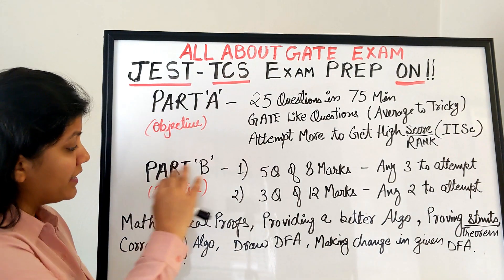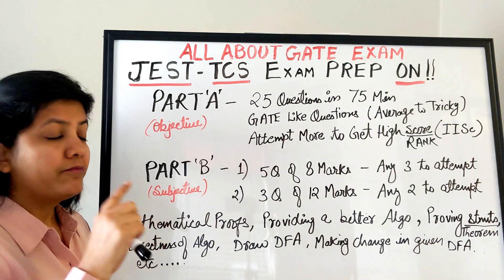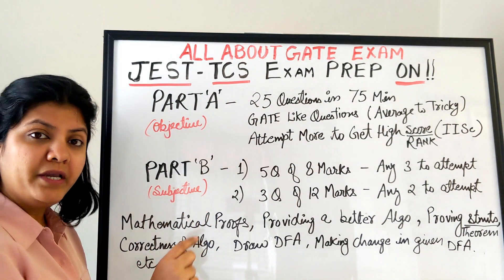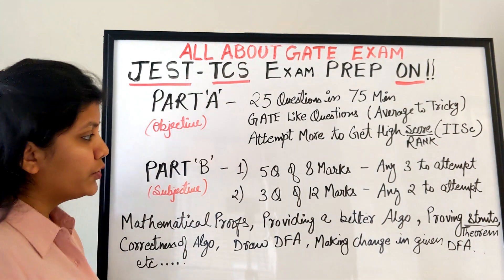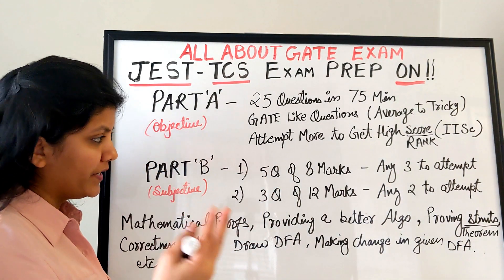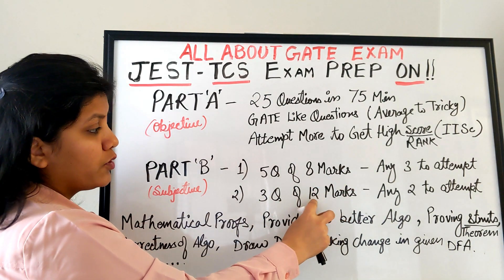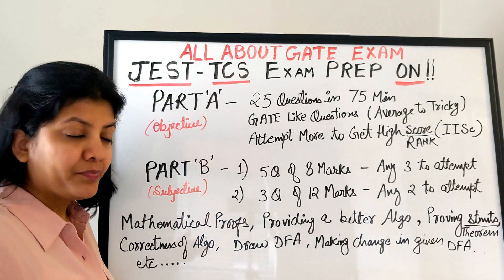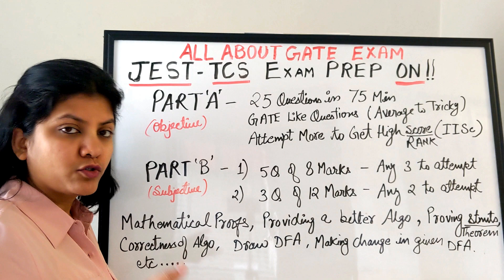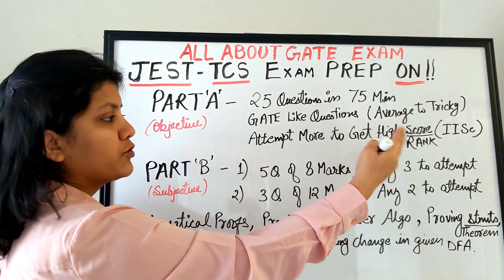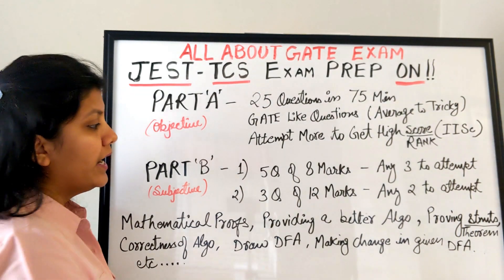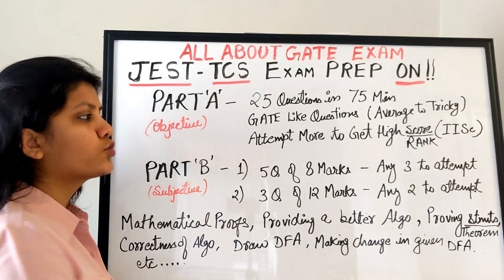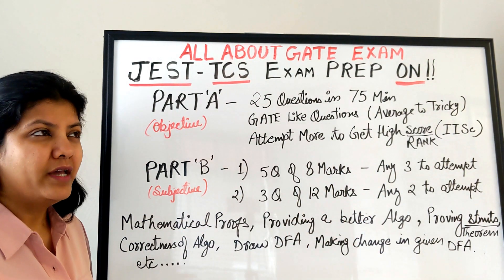For Part B, out of the remaining 105 minutes after Part A, you write descriptive answers. You will see two sets of questions: some worth 8 marks and some worth 12 marks — typically 5 questions of 8 marks and 3 questions of 12 marks, though this may vary. You are required to attempt any 3 from the 8-mark questions and any 2 from the 12-mark questions, for a total of 5 attempted questions.